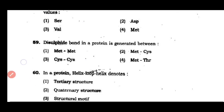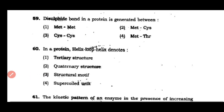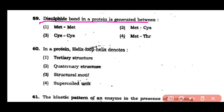Question number 59: A disulfide bond in a protein is generated between methionine and methionine, methionine and cysteine, cysteine and cysteine, or methionine and threonine. The correct answer is option 3 — disulfide bonds are formed between cysteine and cysteine.